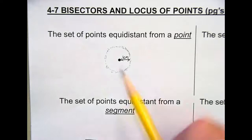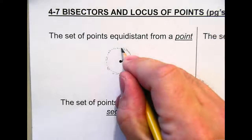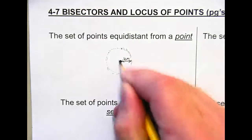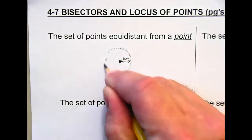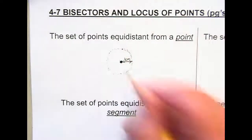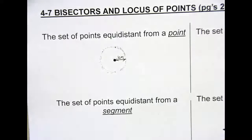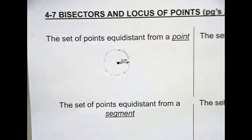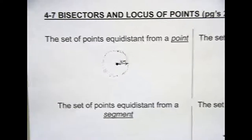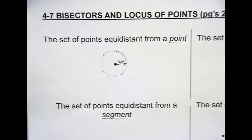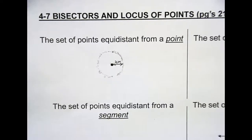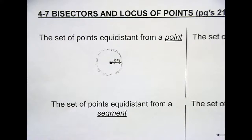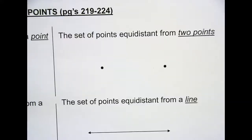No matter where we're at on that circle — if I'm here or if I'm here — if this is a perfect circle, it's always the same distance. That's our radius. Any questions on that one? Remember, this is your note page. Let's go on to the next one.